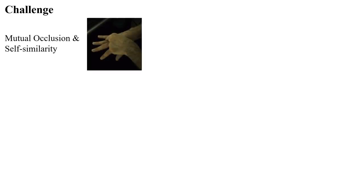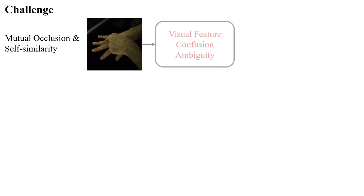Compared to single hand 3D reconstruction, interacting hand reconstruction faces more challenges. On one hand, tightly interacting hands have serious mutual occlusion and self-similarity issues, which makes the visual features extracted by CNNs prone to confusion and ambiguity. These features result in mesh-image misalignment.